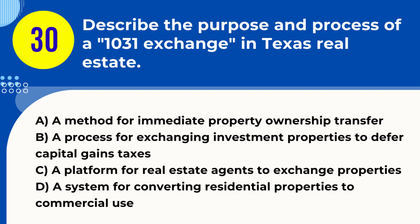Question 30. Describe the purpose and process of a 1031 exchange in Texas real estate. A. A method for immediate property ownership transfer. B. A process for exchanging investment properties to defer capital gains taxes. C. A platform for real estate agents to exchange properties. D. A system for converting residential properties to commercial use. Answer: B. A process for exchanging investment properties to defer capital gains taxes. Explanation: A 1031 exchange in Texas real estate allows investors to exchange like-kind properties and defer paying capital gains taxes on the sale.